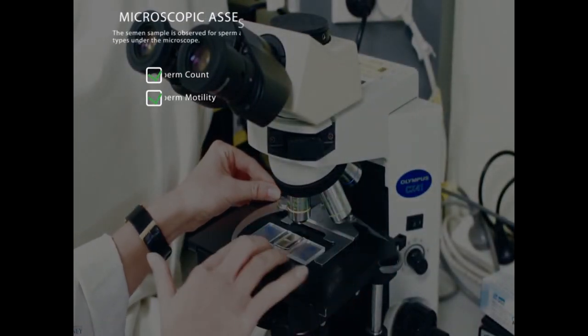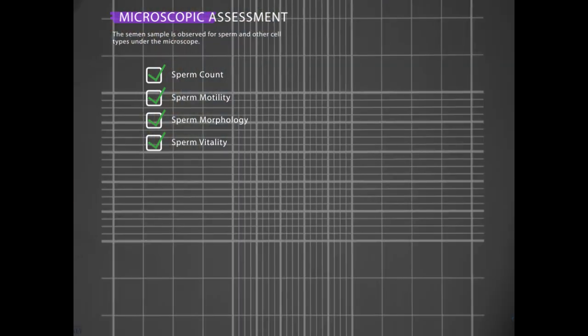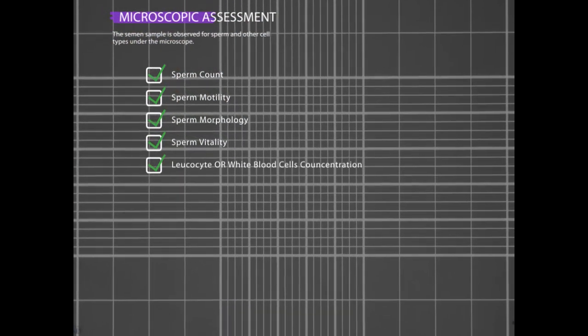Following macroscopic assessment, microscopic assessment is done, which is when the semen sample is observed for sperm and other cell types under the microscope. Assessment of sperm count, sperm motility, sperm morphology, sperm vitality, and white blood cell count are some of the major parameters conducted as part of semen analysis.